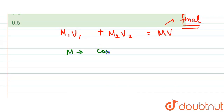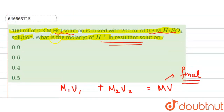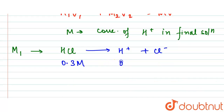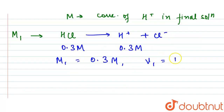Here M is the concentration of H⁺ in the final solution. For M₁, we look at HCl: HCl ionizes into H⁺ and Cl⁻. Since HCl is 0.3 molar, the H⁺ concentration is also 0.3 molar. So M₁ = 0.3 M and V₁ = 100 ml.